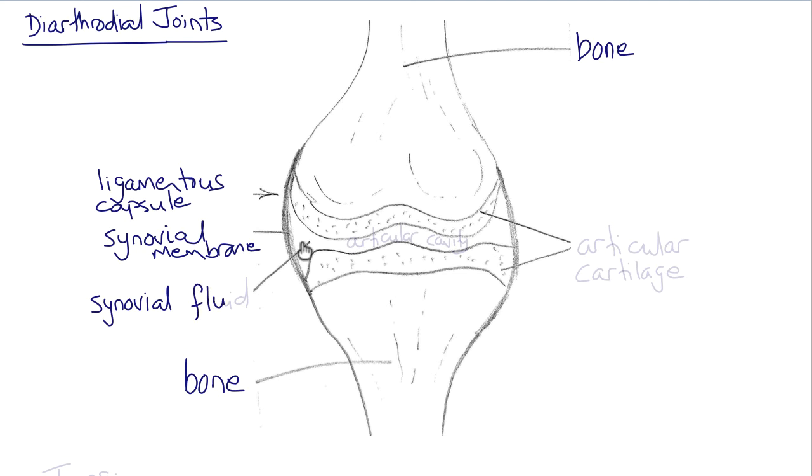Inside the joint is synovial fluid, and at the ends of the bone is the articular cartilage that is also saturated with synovial fluid and forms the bearing surface for joints.